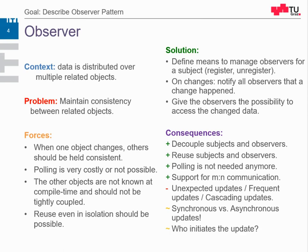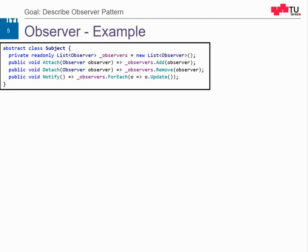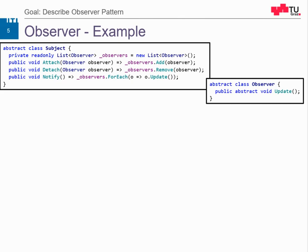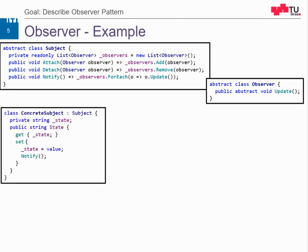Then there's the question of who initiates the update — should the subject itself initiate it, or should the updater first perform the update and then commit to the subject? Here is an example in C#. We have an interface subject which has a list of observers and the attach and detach methods. Of course, we have the notify method which updates all observers. We have an observer class which only has the update method. Then we have a concrete subject — for example, this subject has some state and a property for that state. Whenever the property is set, we call the notify method, here after the state is updated.